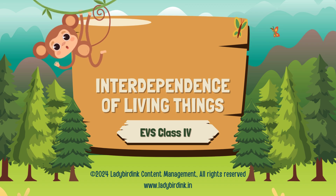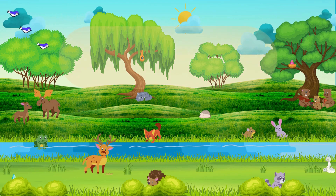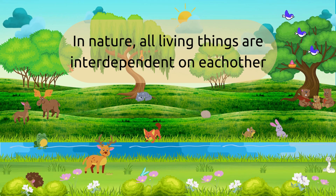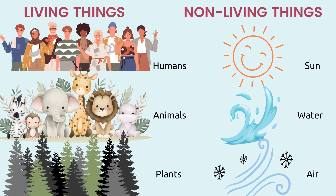Hi kids, today we are going to learn about the interdependence of living things. Do you depend on your mom and dad for survival? Yes, you depend on them to provide you food, to provide you shelter, and to take care of your day-to-day needs. So you are dependent on your parents. We all are interdependent on each other. All organisms in this world depend on each other directly or indirectly for survival. We also depend on non-living things like water, sunlight, and air for survival.